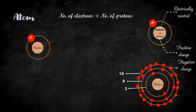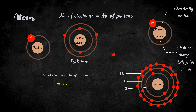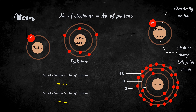An atom will have equal number of protons and electrons — that means equal number of positive charges and negative charges. So as a whole, an atom is electrically neutral. Let's consider an example: boron. It has 5 protons and 5 electrons. If a boron atom loses an electron, then it has 4 electrons and 5 protons, meaning it has more positive charge. So now the boron atom becomes a boron positive ion. In the same way, if a boron atom gains an electron, then the boron atom becomes a boron negative ion.